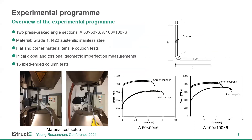We have conducted a testing program on two press-break stainless steel angle sections. The testing program included tensile coupon tests, measurements of initial geometric imperfections, and 16 fixed-ended column tests. These two figures show the setups for the flat and corner material tensile coupon tests, and the obtained stress-strain curves are shown here. The material strength of the corner coupons are obviously higher than that of the flat coupons for press-break sections.